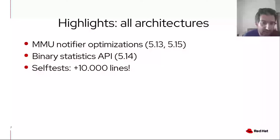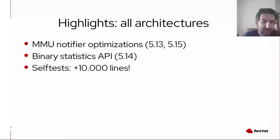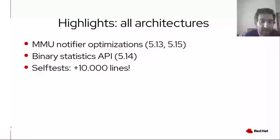The topic of statistics and binary statistics has been raised several times over the years, and there were also talks about it at KVM Forum, for example in 2019. So finally, we have an efficient binary statistics API directly exposed through KVM, and not just debugFS statistics as it was in the past. Also very interesting is that we had over 10,000 lines of self-tests added, meaning about half of the self-tests were added over the last year. This is important in order to avoid regressions and to simplify testing of new patches sent to the hypervisor.